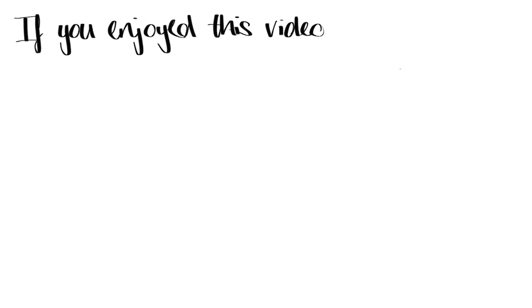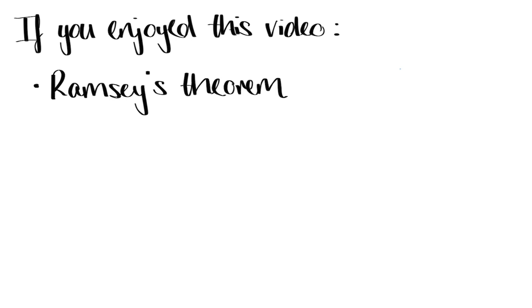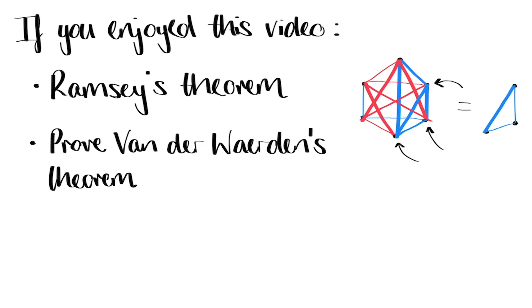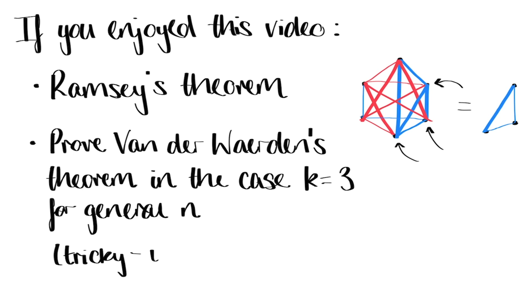I hope you enjoyed this video. If you had fun learning about van der Waerden's theorem and want to learn more maths like this, you might like to explore the subject of Ramsey theory further. One of the most famous results in the area is Ramsey's theorem, which talks about colouring in the edges of graphs, and when you can guarantee to find groups of vertices where all the edges between them are the same colour — for example, a triangle all in one colour. If you're feeling really brave, you might like to try and prove van der Waerden's theorem in the case k equals 3 for every number of colours n. This can be done by induction, if that's something you've seen before. So feel free to leave your thoughts in the comments. That's it from me — I hope you enjoyed, and thank you very much for watching.